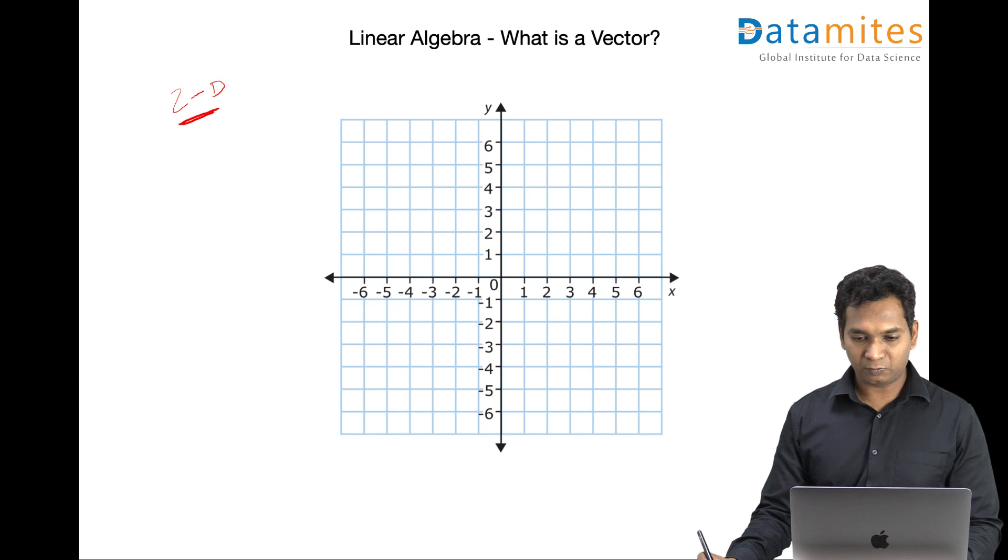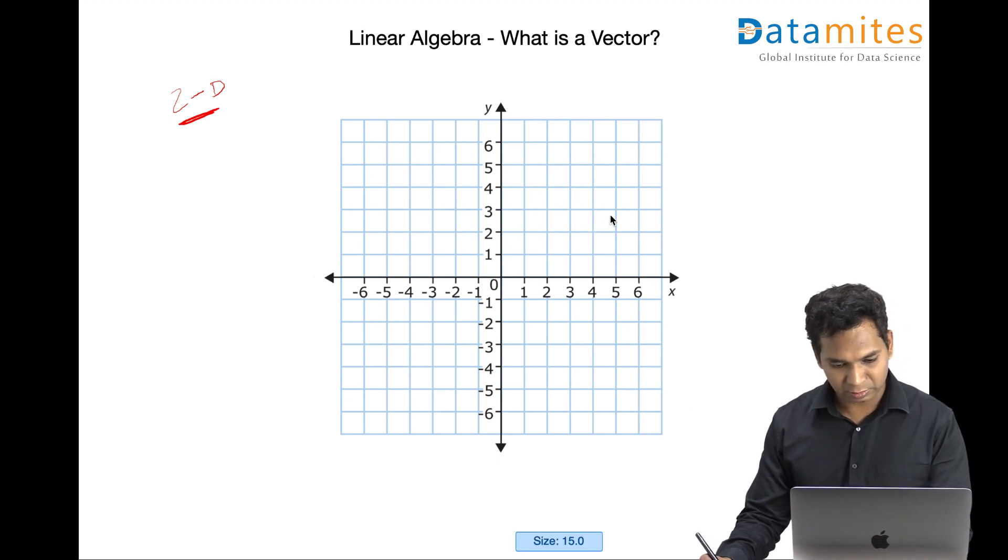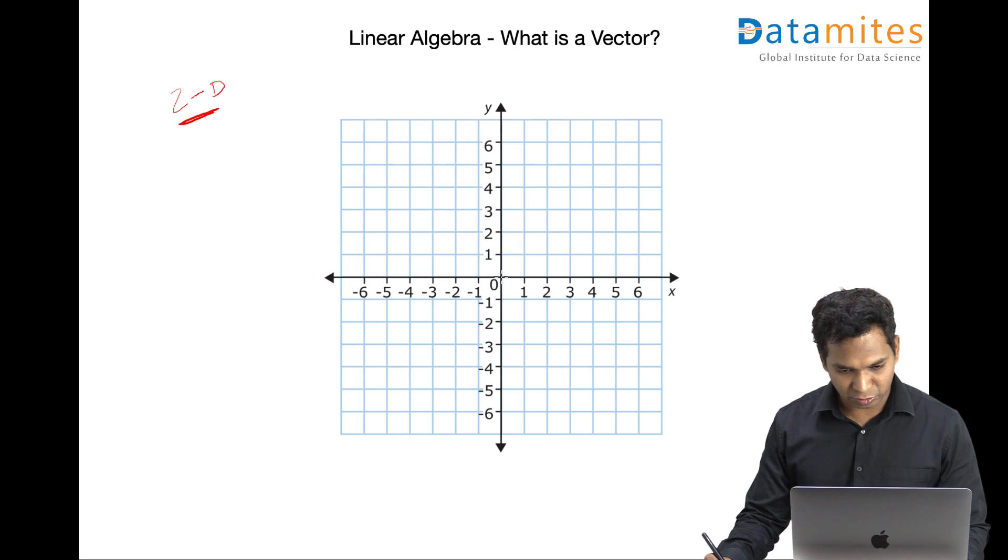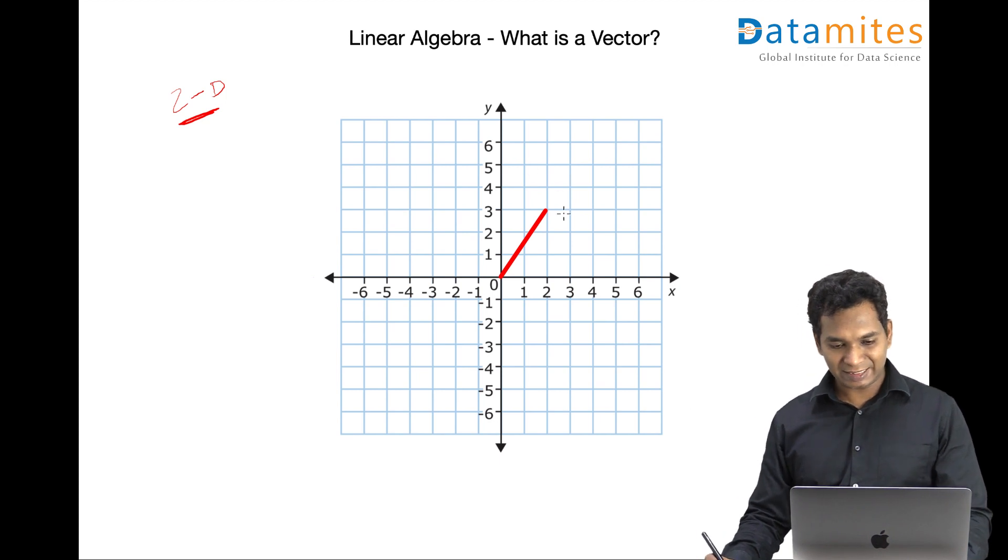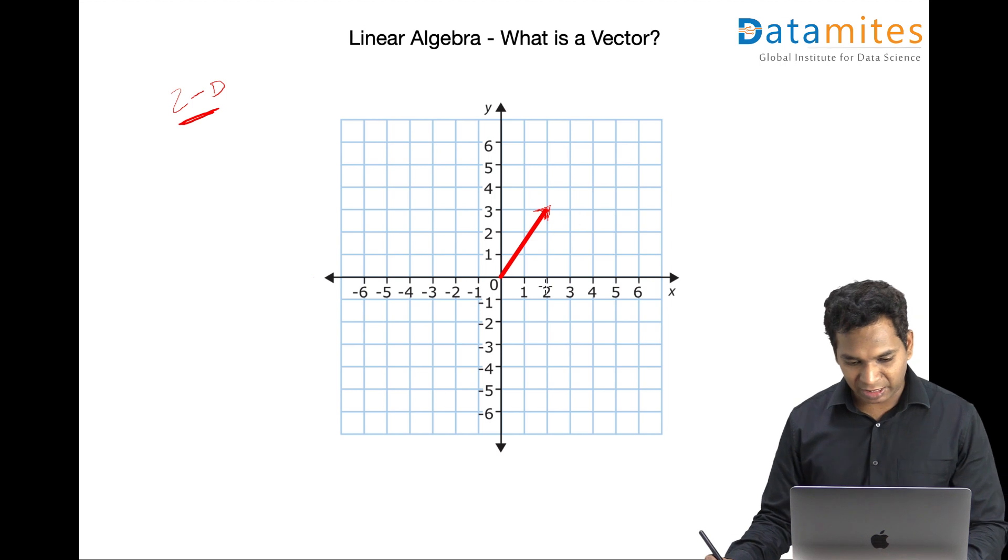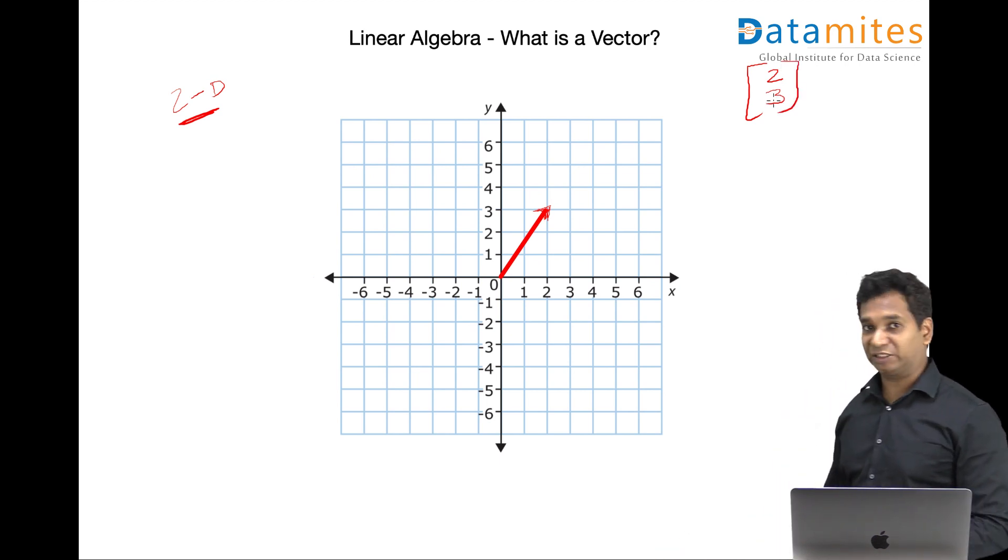So if you draw a line, something like this, for example. So this is a vector, it has a direction, I am giving a direction. And this can be represented by two units on the x axis and three units on the y axis. So this can be represented as two and three. And this is a two dimensional vector.